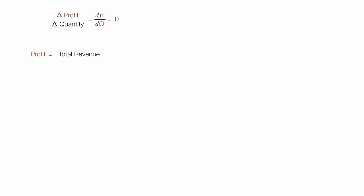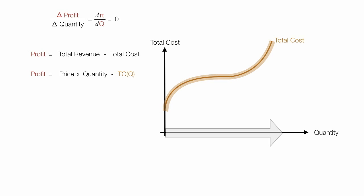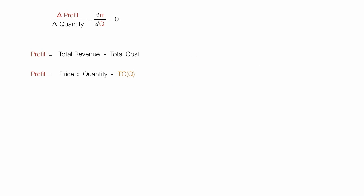Profit is equal to total revenue minus total cost. Profit equals price times quantity — because that's total revenue — minus total cost. Total cost is a function of quantity, and as quantity increases, total cost is not fixed; it changes. So profit equals P times Q minus total cost as a function of quantity.